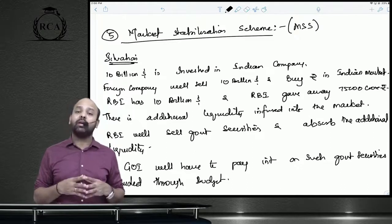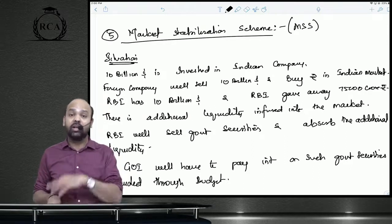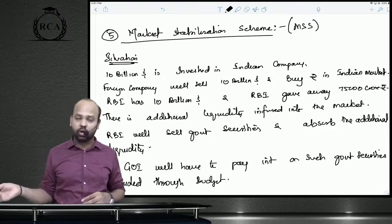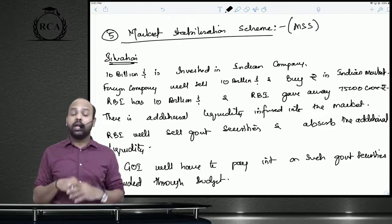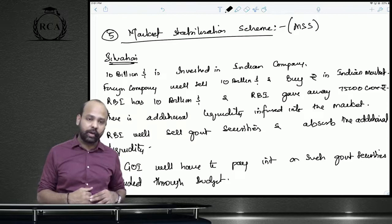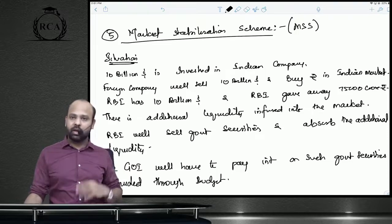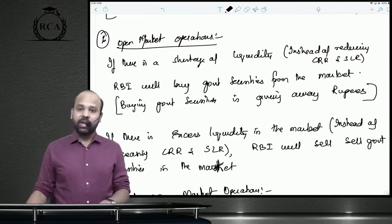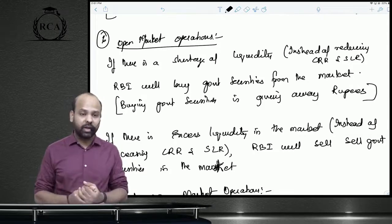The market stabilization scheme (MSS) is where the RBI sells government securities to absorb additional liquidity created by foreign capital inflows. For example, if $10 billion flows into India, the RBI buys those dollars and releases ₹75,000 crore into the market. To absorb this, the RBI sells government securities and retrieves that liquidity. The interest on these securities is paid by the Government of India through budgetary provisions. A limit is fixed for MSS under an agreement between the Government of India and the RBI.